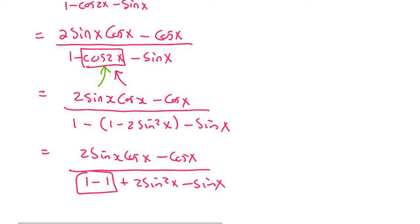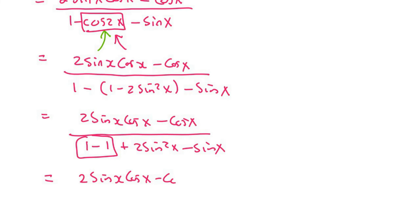And then these ones can cancel out. And so at the bottom we're now going to have 2 sin squared x minus sin x.